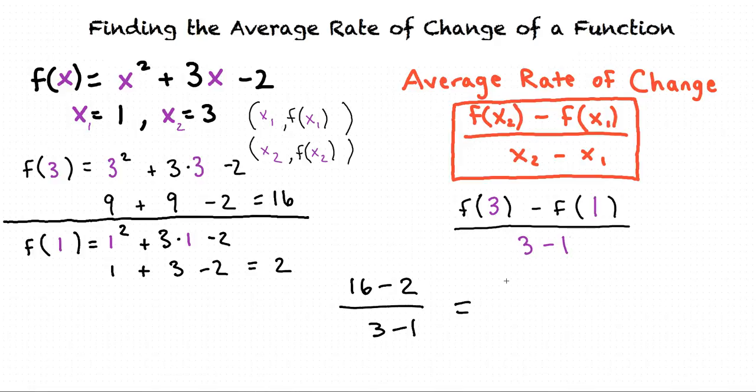16 minus 2 is 14 and 3 minus 1 is 2. 14 divided by 2 equals 7. After plugging in our values we find that the average rate of change in the function f of x from x equals 1 to x equals 3 is 7.